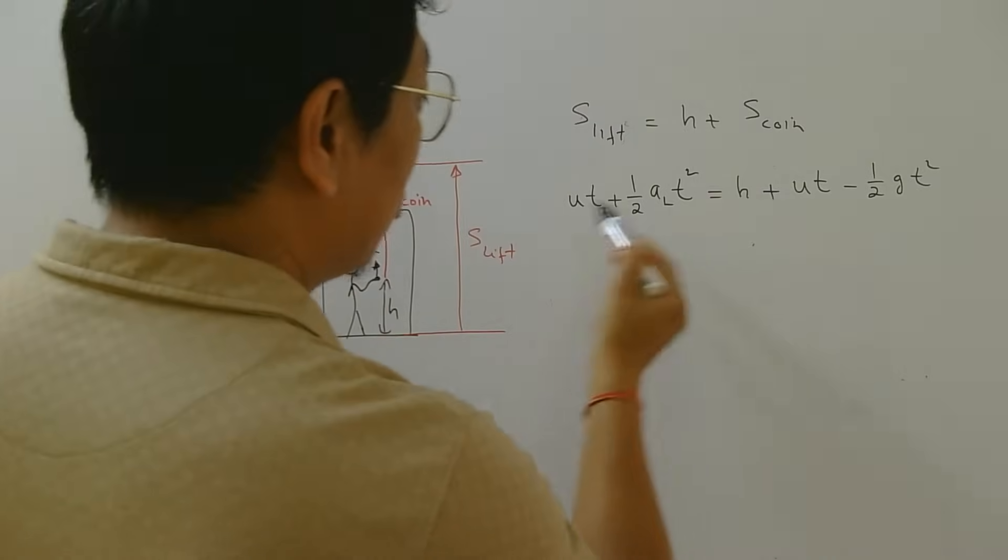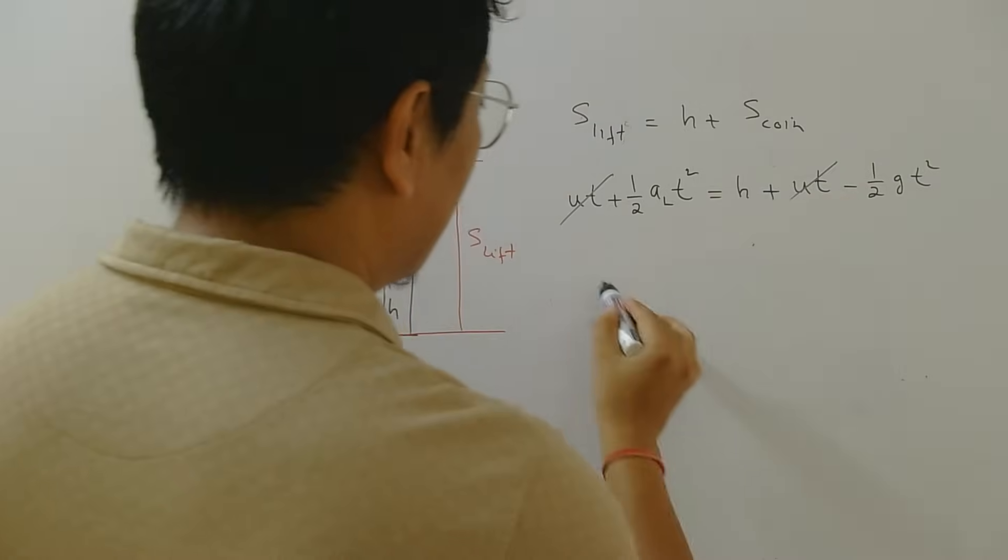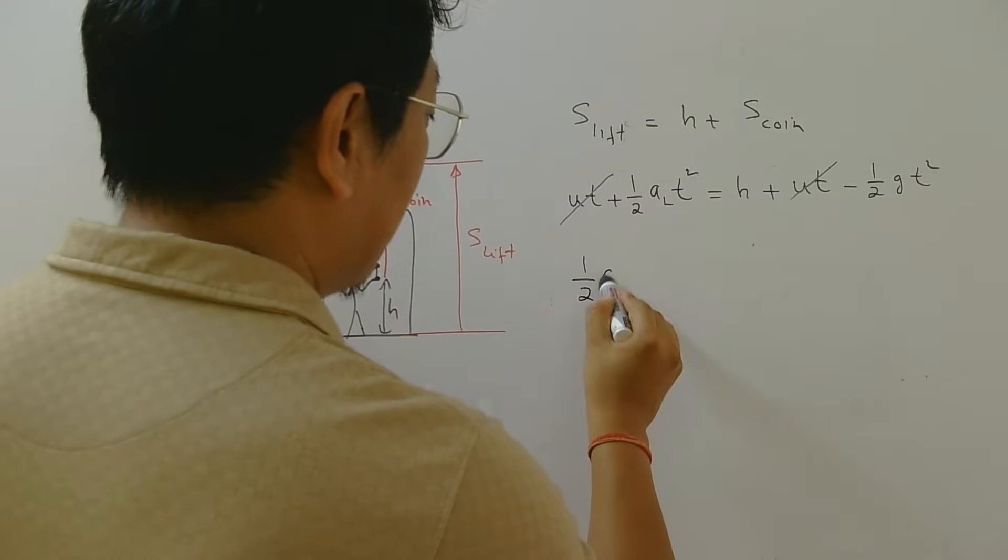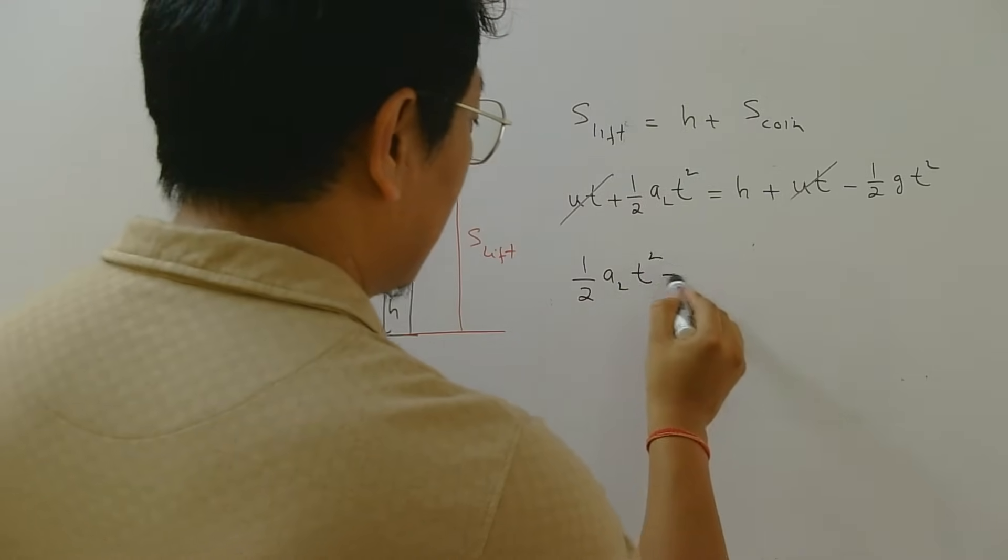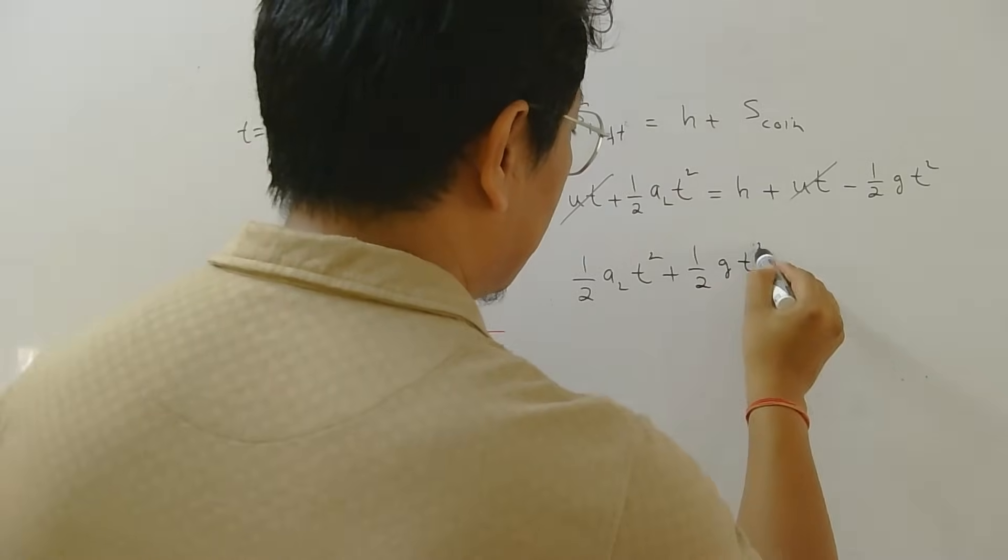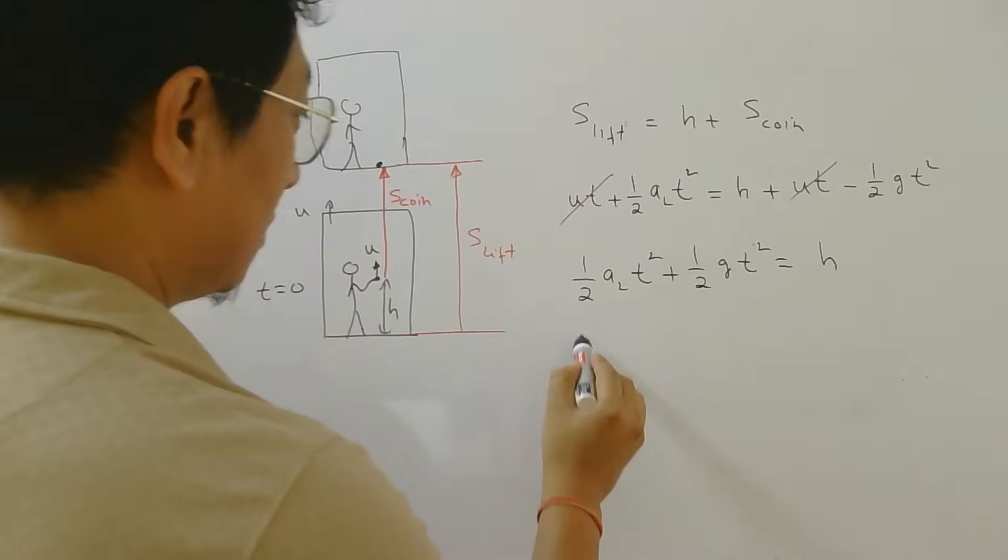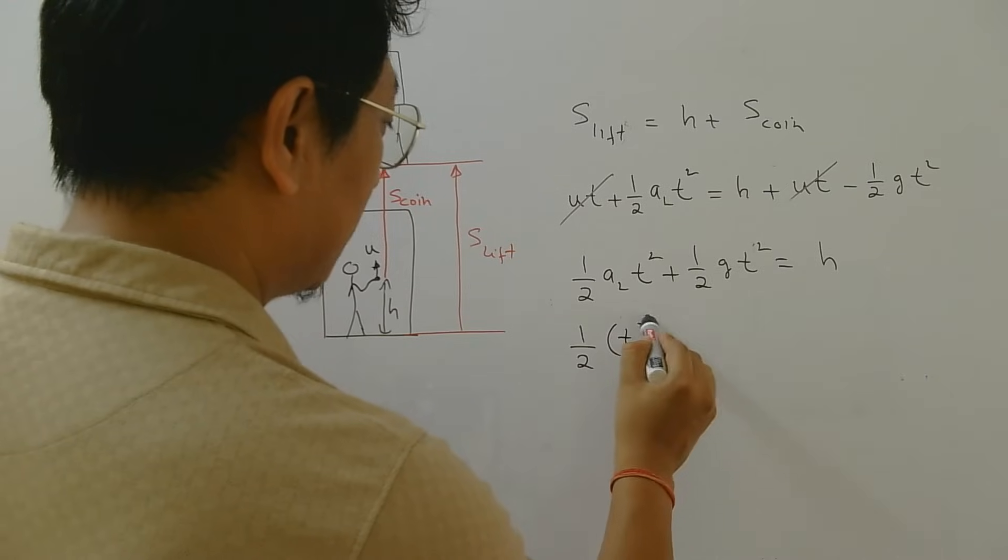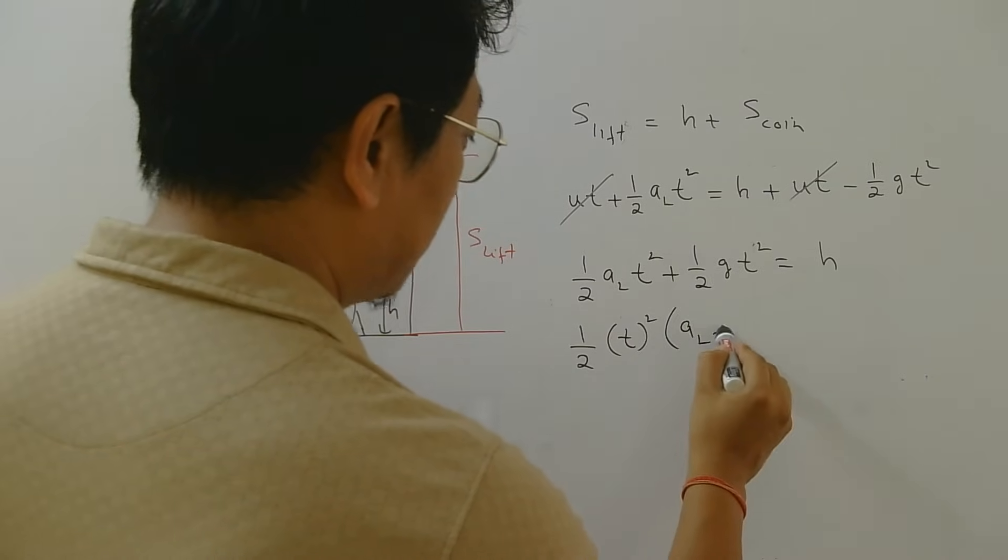You can see u t you can bring here and cancel this side. And you can bring this half g this side. So you get half a_l t square plus half g t square. So you can take half and t square common, a_l plus g.